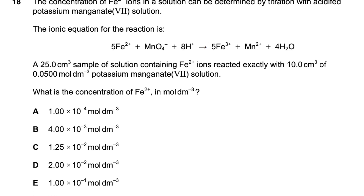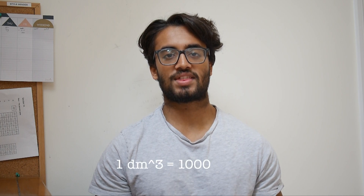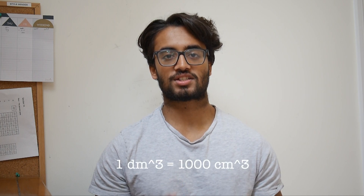Units are really important in BMAT Section 2. A lot of times the question will give you units that are designed to trip you up, especially with regards to volumes. With all the formulae, you want to use volumes in decimetres cubed, but the questions are going to give you quantities in centimetres cubed. All you need to remember is that one decimetre cubed is a thousand centimetres cubed.